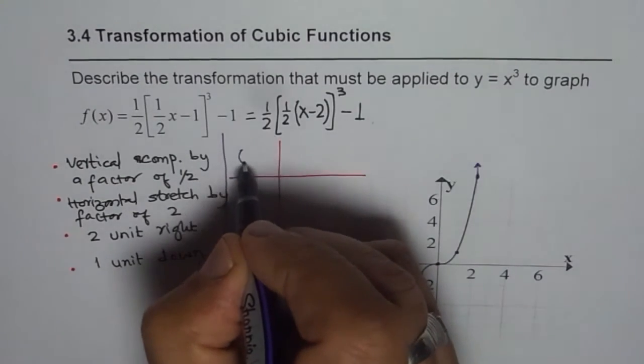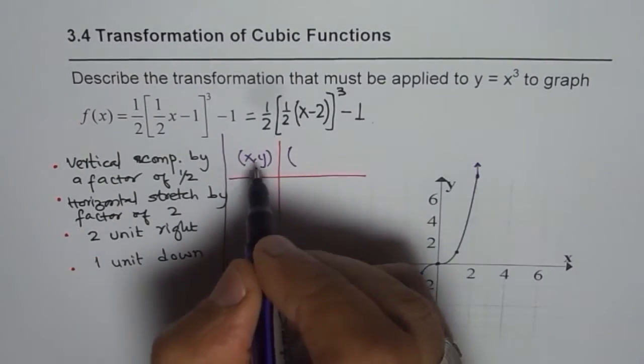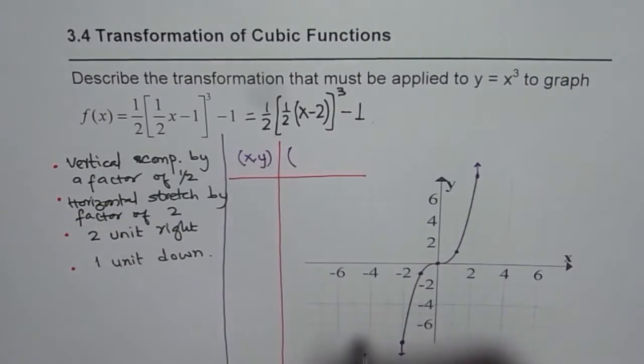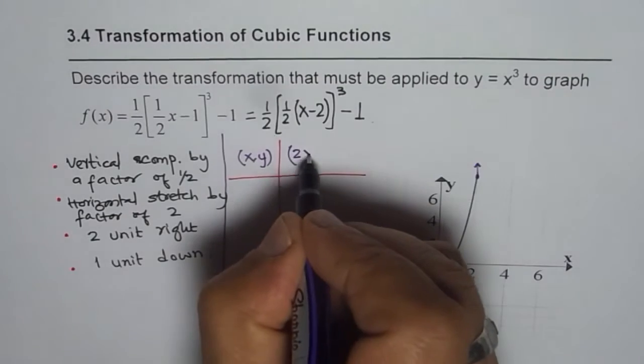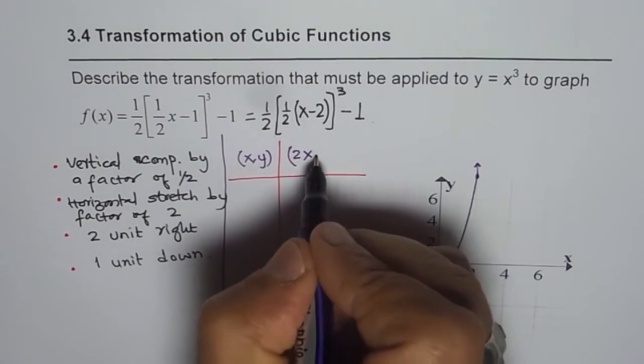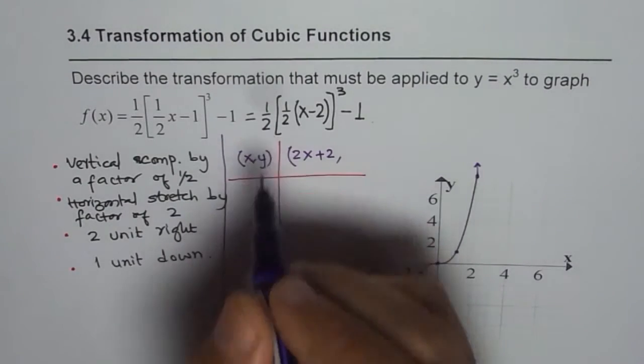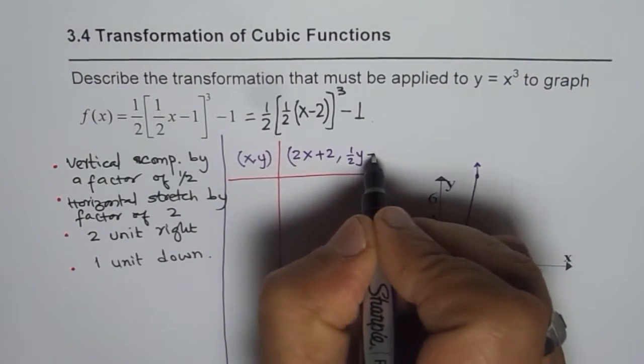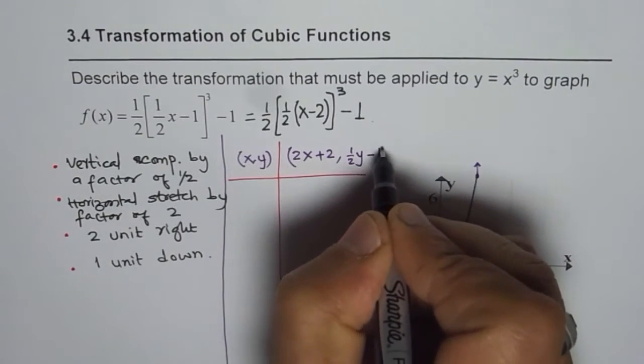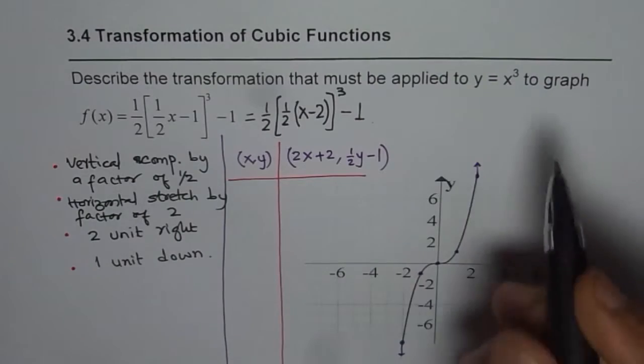Let us say the point on the original function is (x, y). Then where will its image be on the transform function? For x, it gets multiplied by 2, so it is 2x, then plus 2, 2 units to the right. For y, it gets multiplied by half and minus 1. So 0.5 times y minus 1.